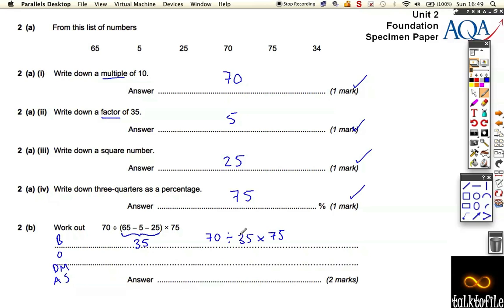We've got division and multiplication, so we work from left to right. 70 divided by 35 is 2, and then we times that by 75 which is 150. Remember your BODMAS: do the bracket first, then work from left to right.